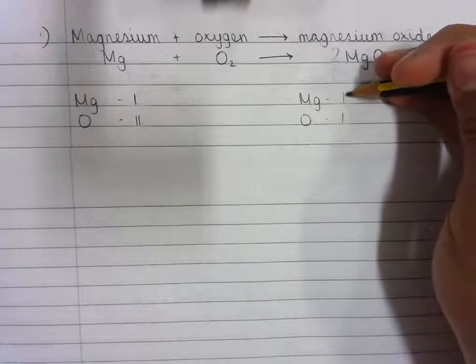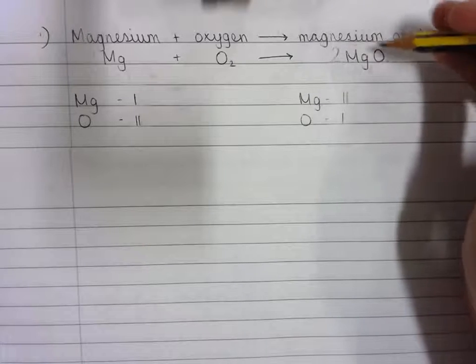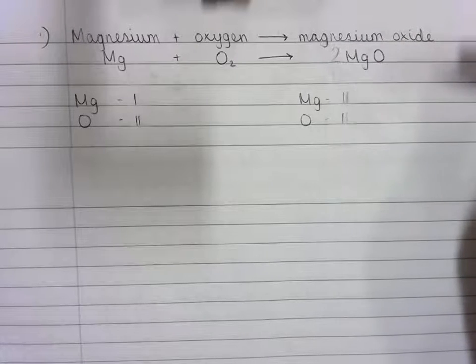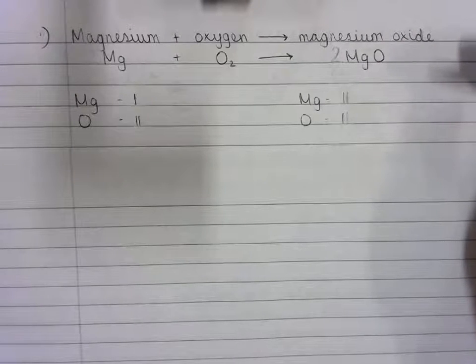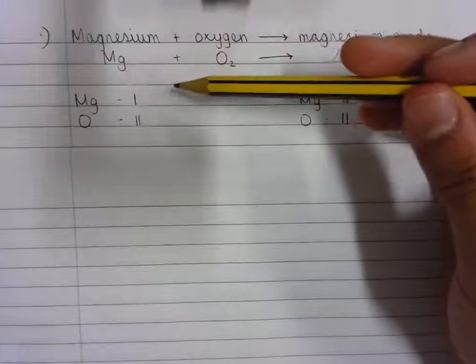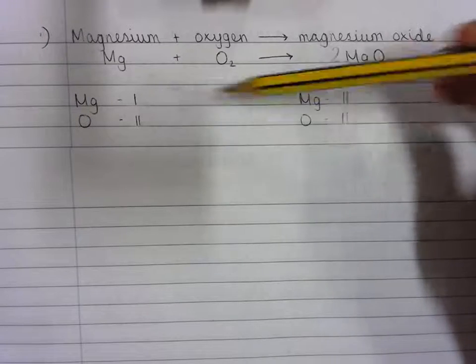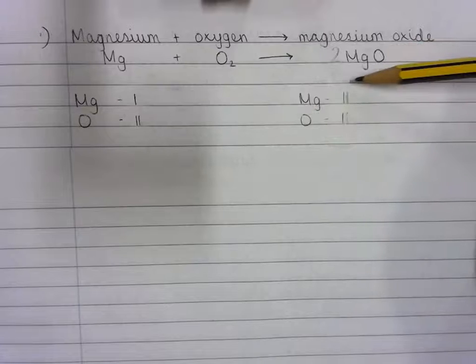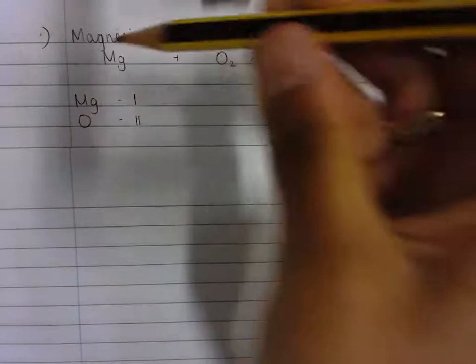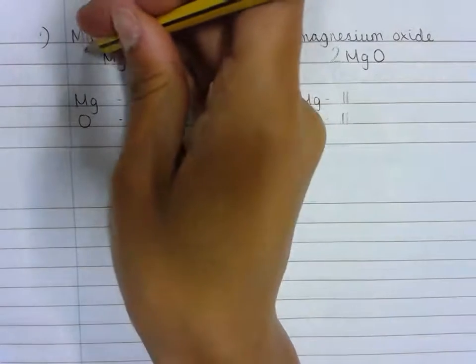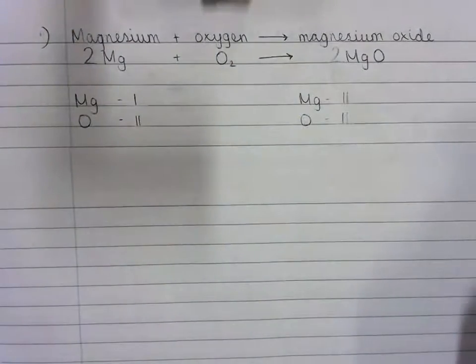So there are now two magnesium atoms and two oxygen atoms on the product side. Ask: is it balanced? The answer is no, because there is one fewer magnesium atom on the reactant side of the equation. So we need to increase the number of magnesium atoms to two because there are two magnesium atoms on the product side. Put a two in front of the magnesium and remember to re-tally.